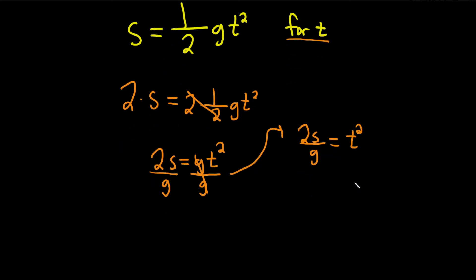I'm going to go ahead and write this with the t squared on the left-hand side because it looks better. So t squared is equal to 2s over g. Okay, to solve for t, we just have to get rid of the square. So we just take the square root of both sides.